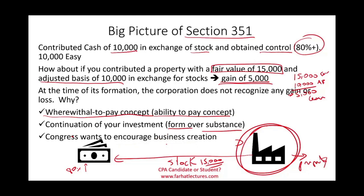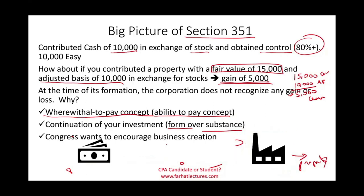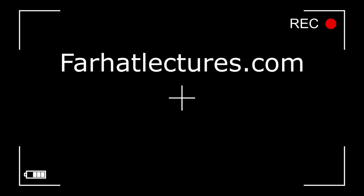Another reason is that Congress wants to encourage business creation. So Congress created Section 351 — the corporate formation rules — which say that when you contribute property to a business, obtain control, and meet certain conditions, there are no tax consequences. There are three conditions for Section 351.